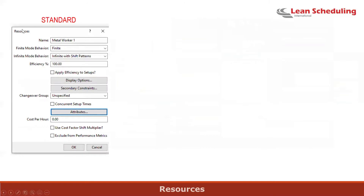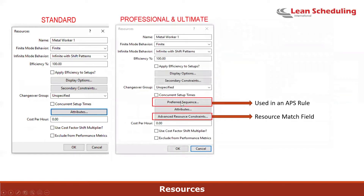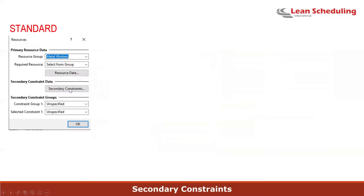Resources are the machines we schedule work on. The Ultimate version provides additional fields such as preferred sequence, which is used in an APS rule. For example, when manufacturing ink colors, you'd want to go from light to dark ink before going back to light, minimizing changeovers and cleanups. There's also a resource match field — additional features that help control how work is scheduled on resources.